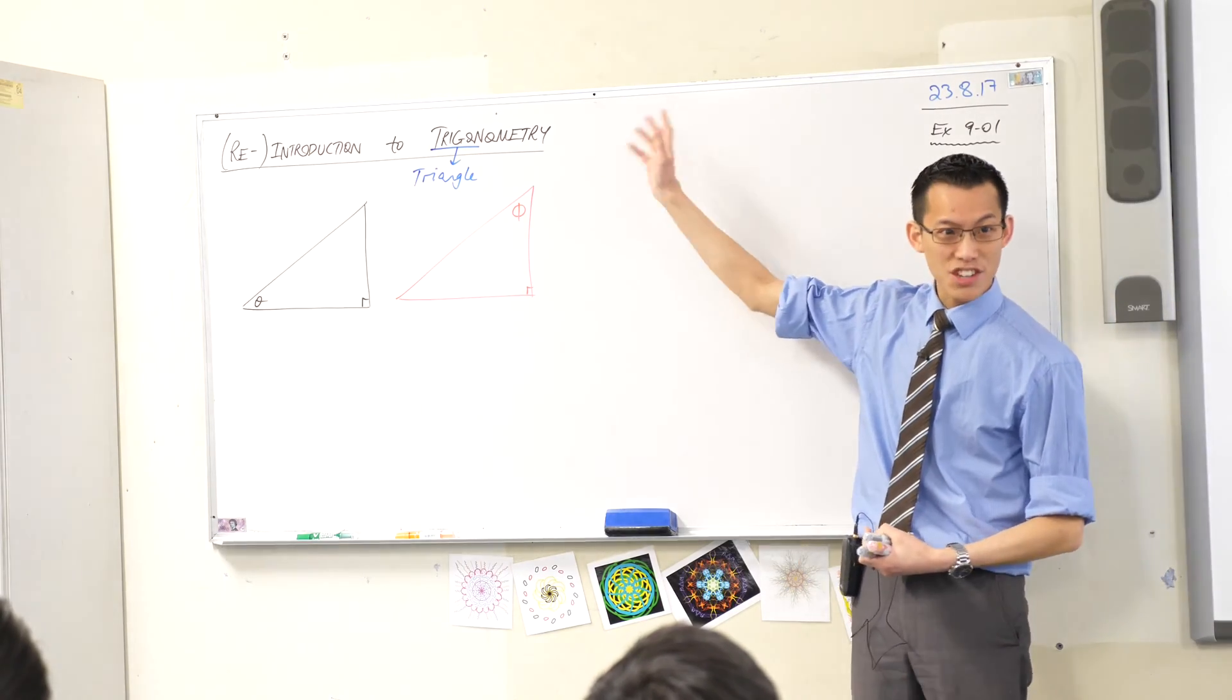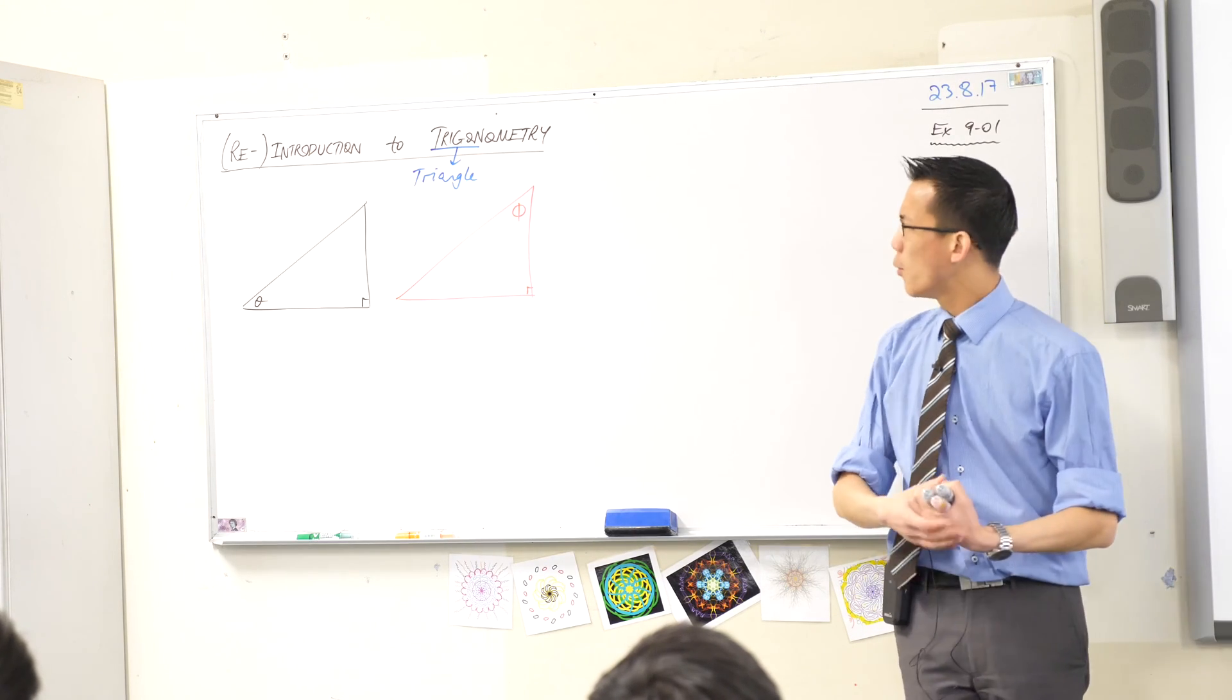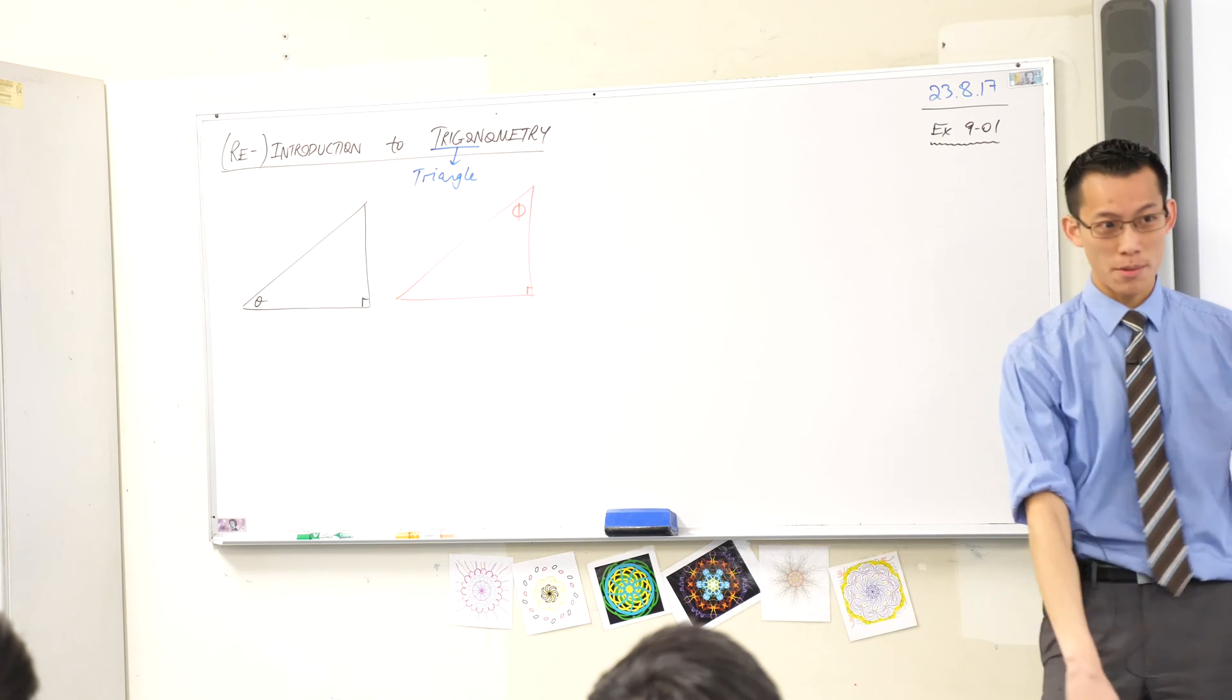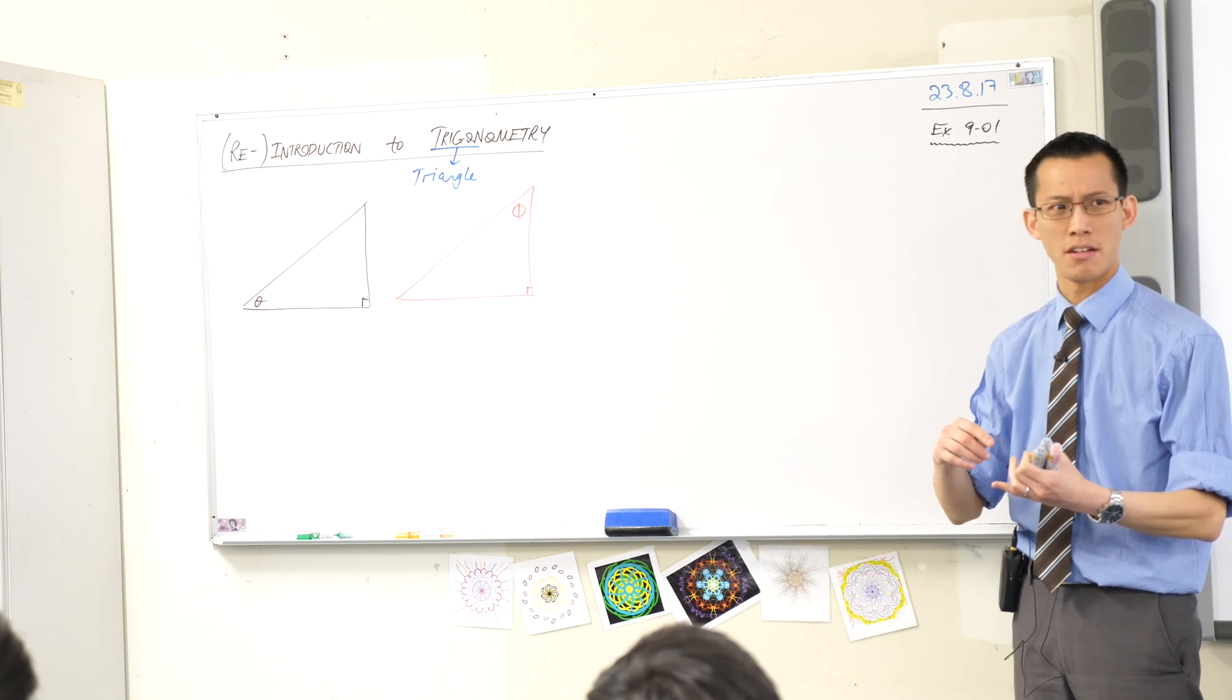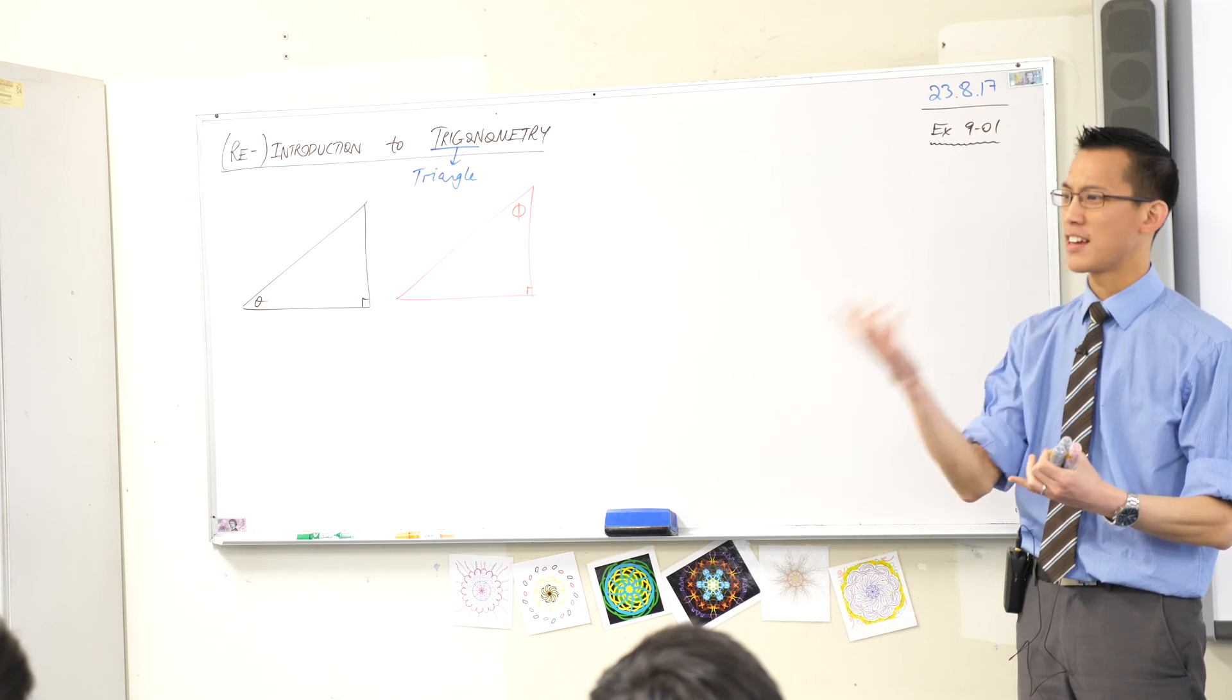So this is a three-sided shape, a trigon, just like a hexagon is a six-sided shape and so on. When you see -ometry like optometry or geometry or what else has metry on it? I'm sure there's more. Didn't I say geometry?